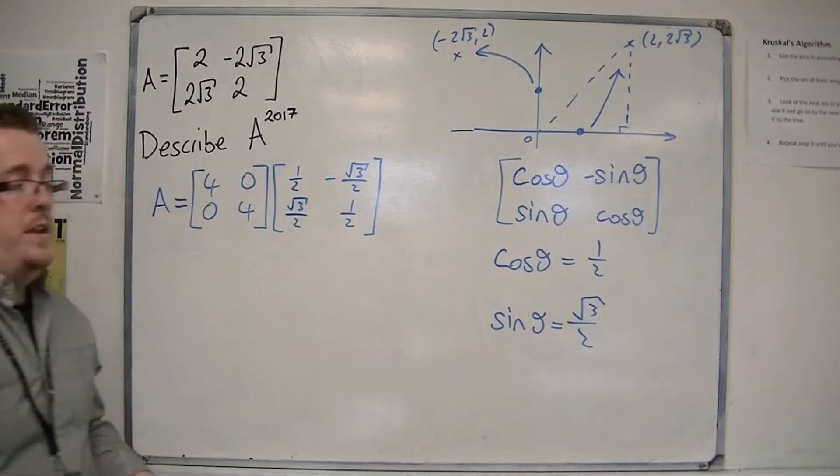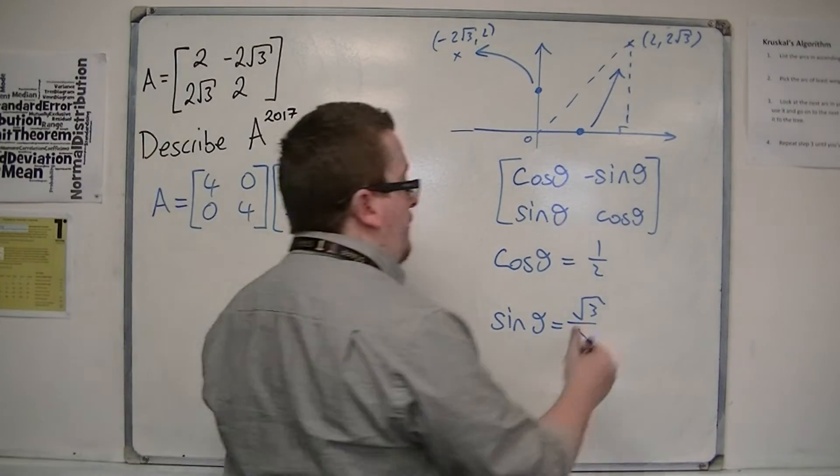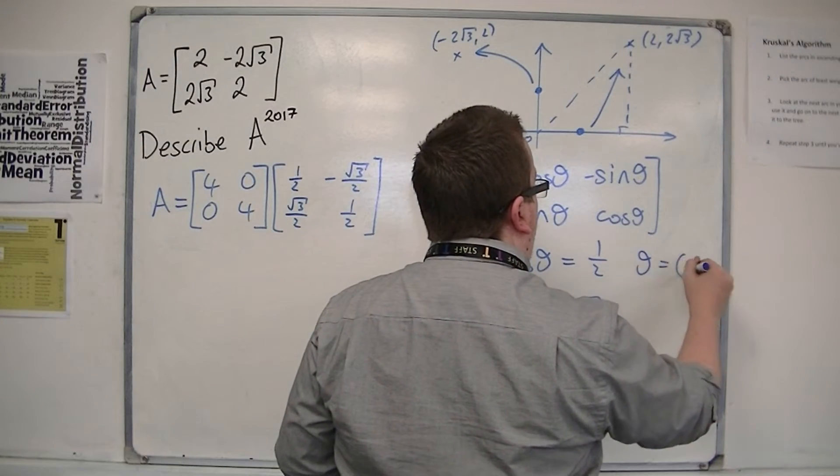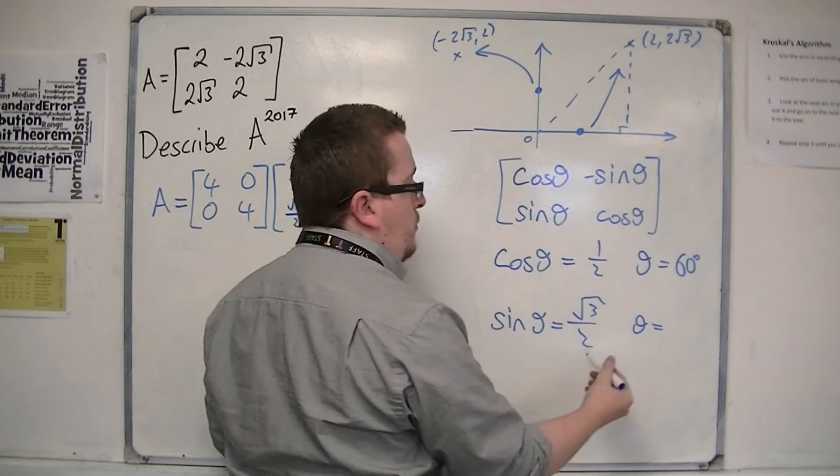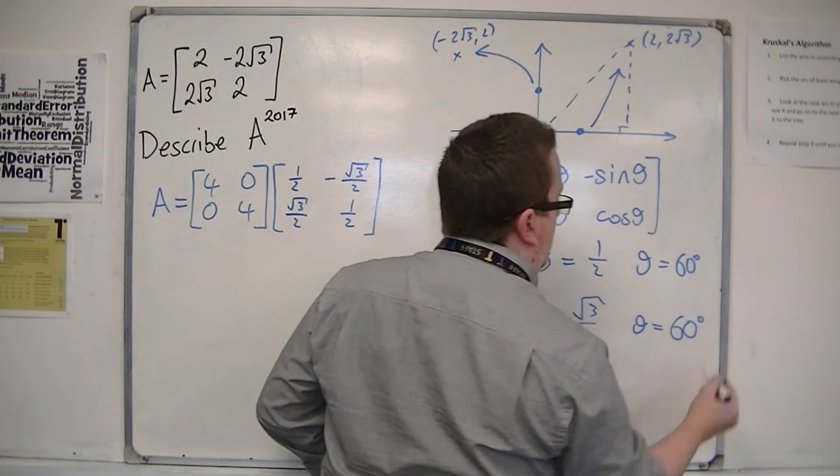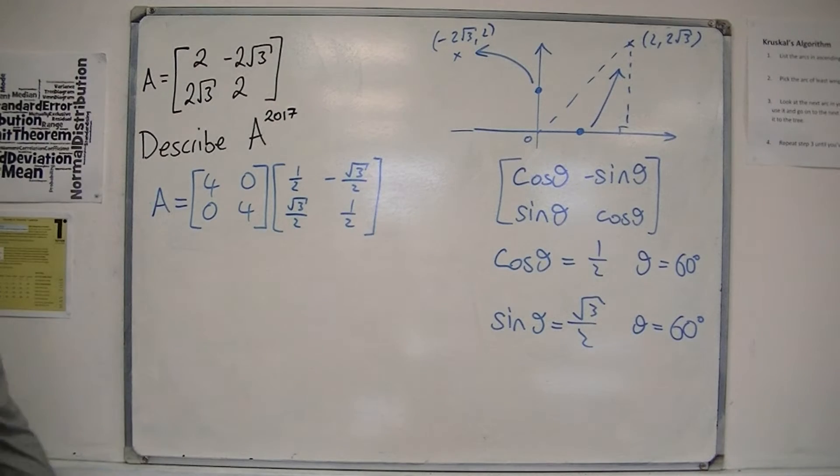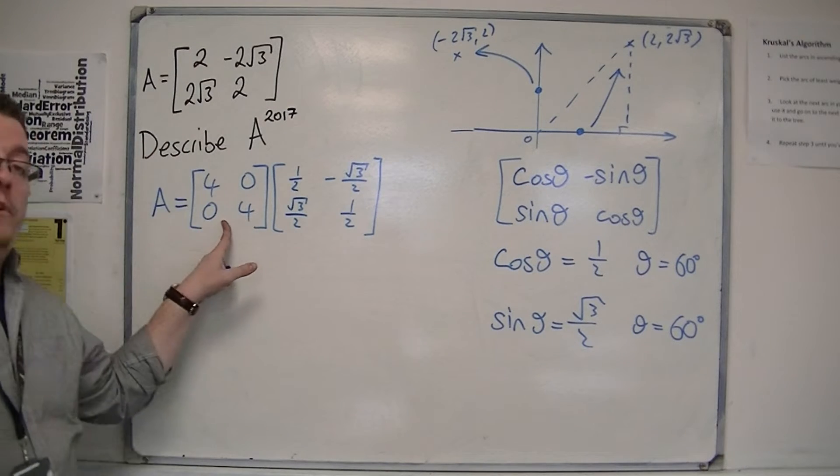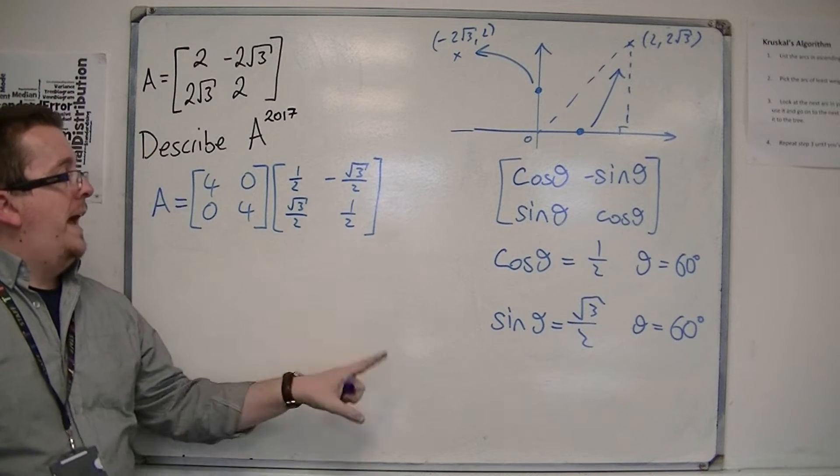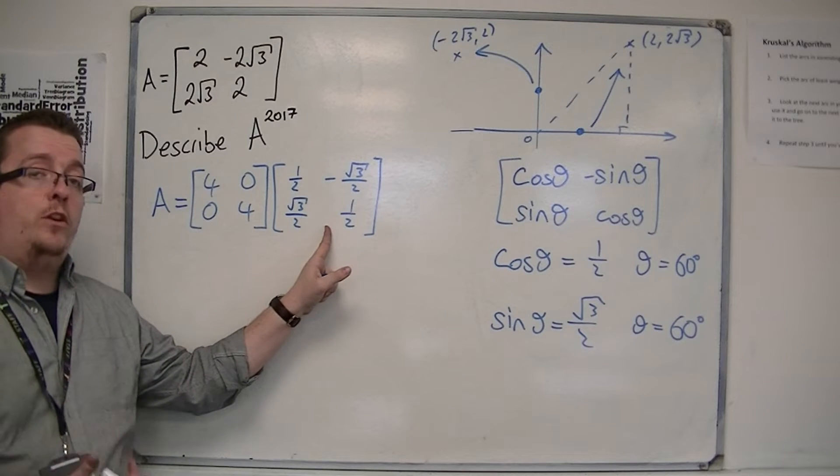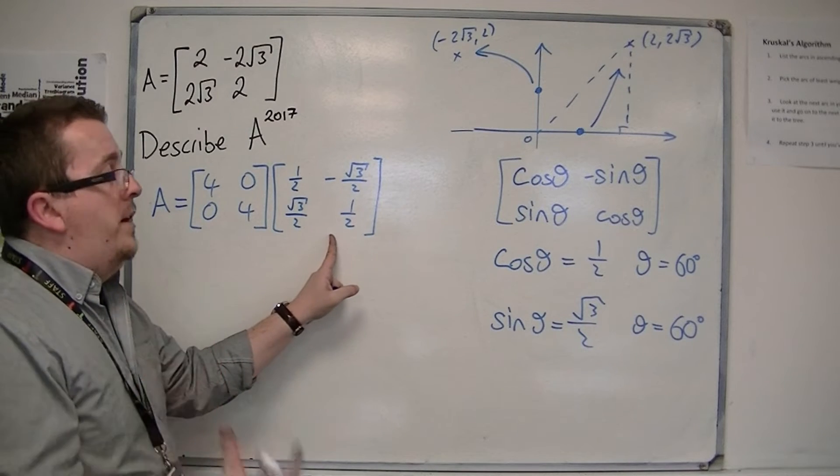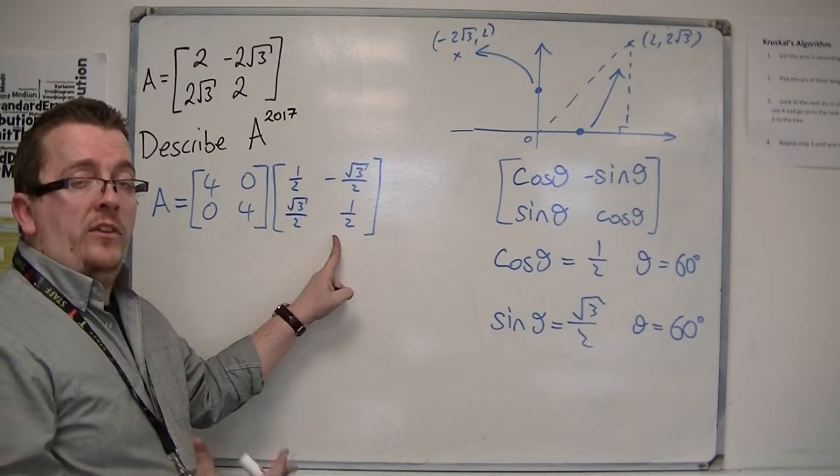So if you inverse cosine 1 half, you find that theta is 60 degrees. And the same for sin theta equals root 3 over 2. Theta must be 60. So, we have an enlargement by scale factor 4, and a rotation anticlockwise about the origin by theta equals 60 degrees.